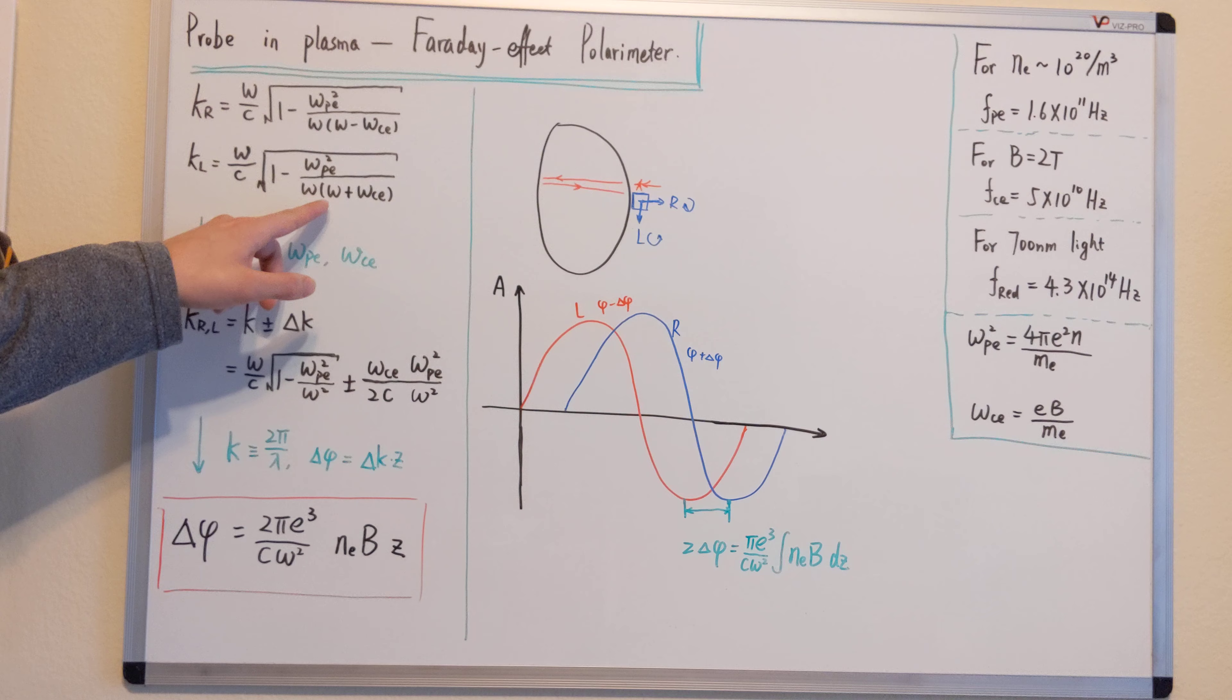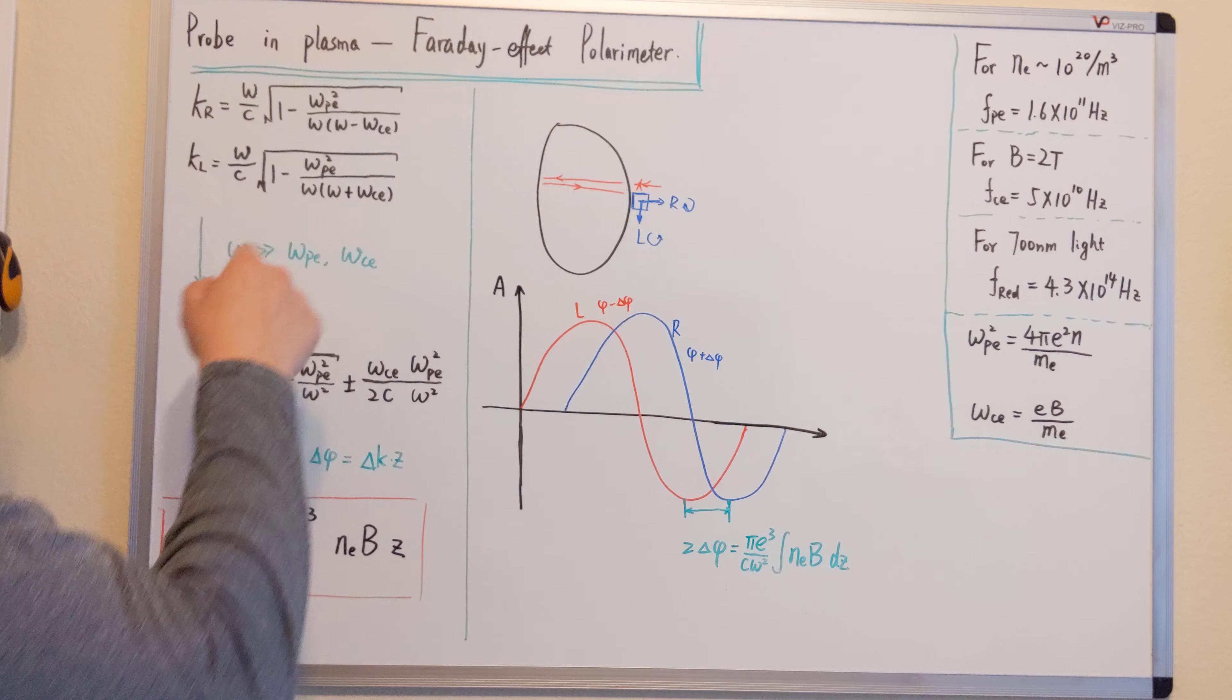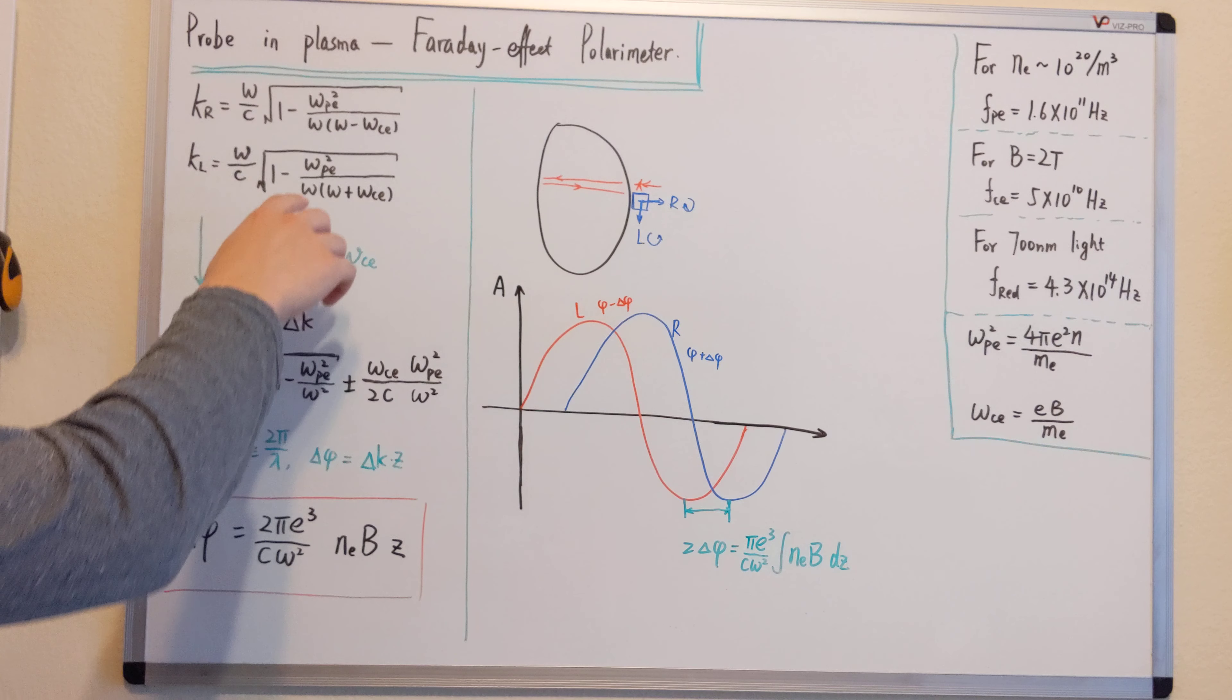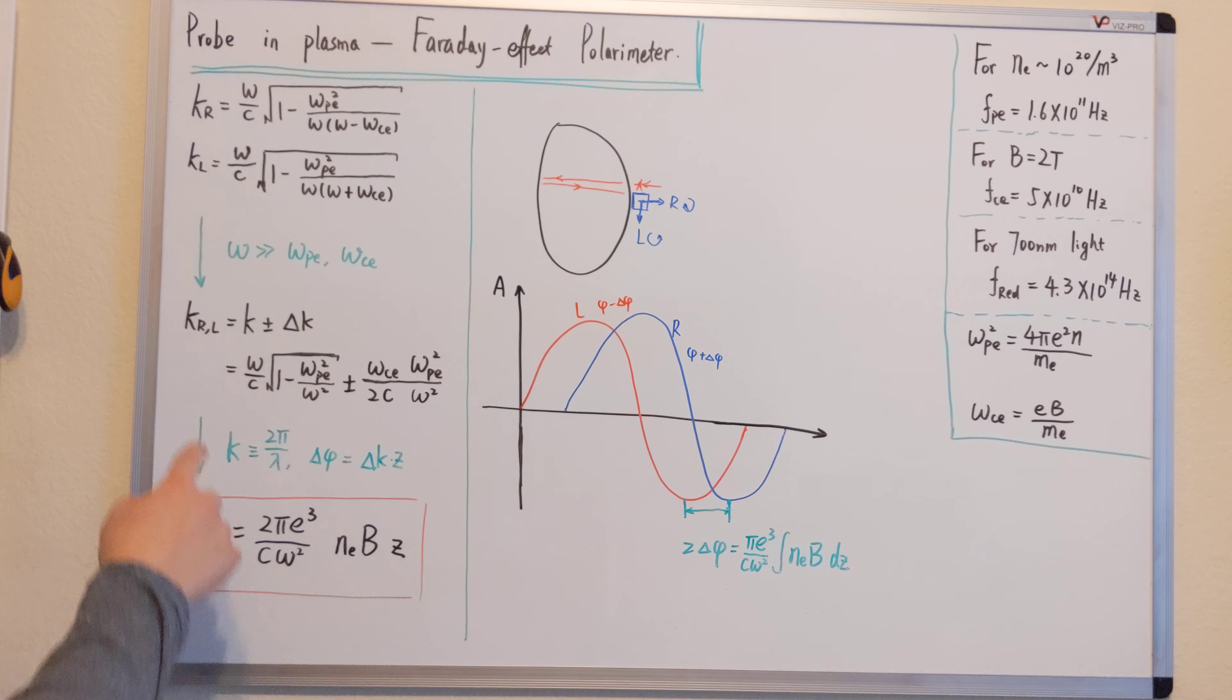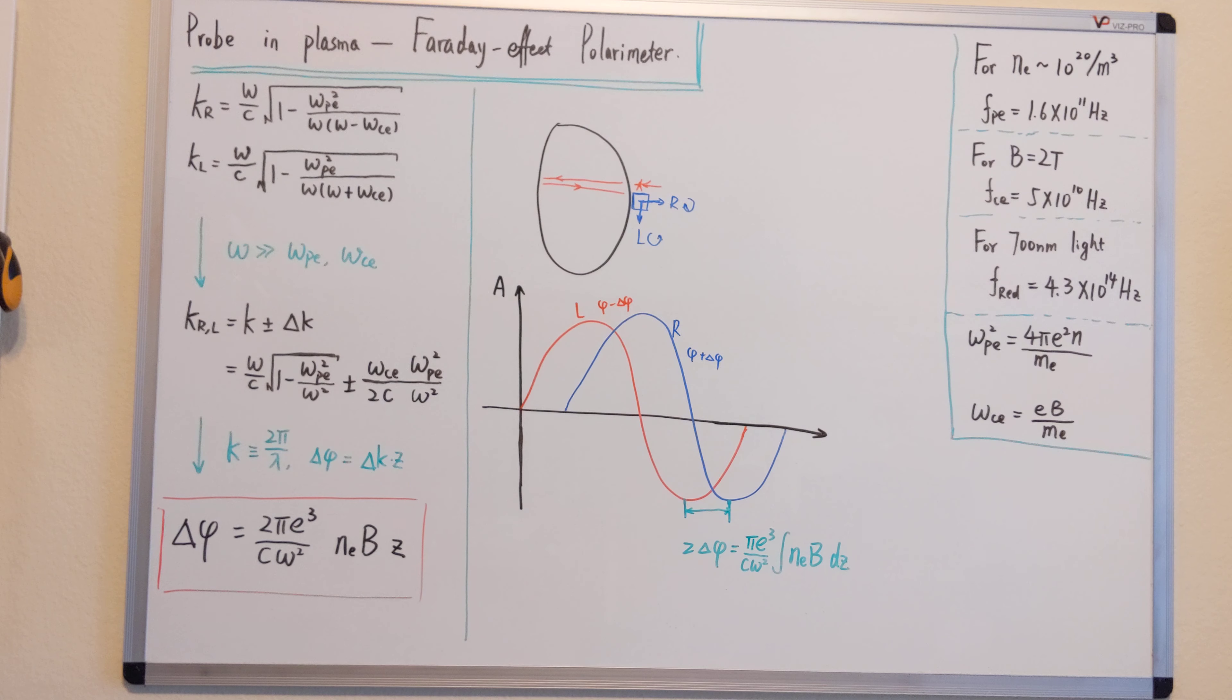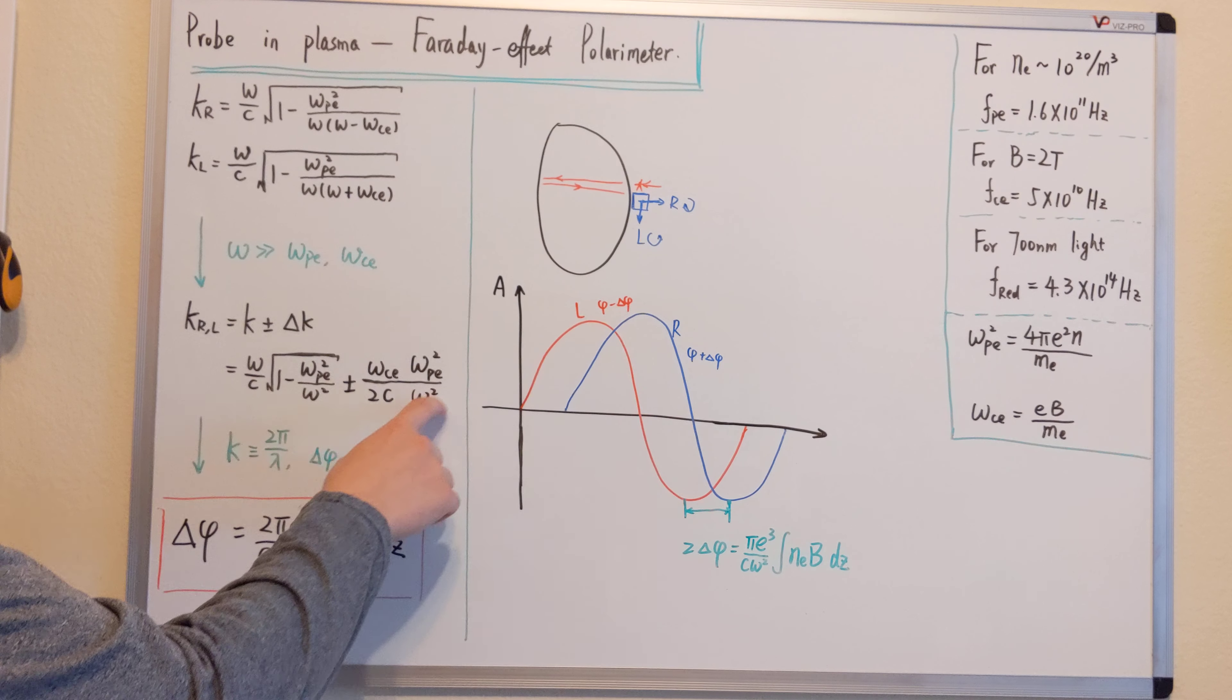That means we can think omega is a bigger number and we can Taylor expand in terms of omega p over omega, omega c over omega. And then we're left with this expression. We have k plus minus delta k. You can do that in your own leisure because this is pretty much the basic Taylor expansion you have. And they ended up having this.